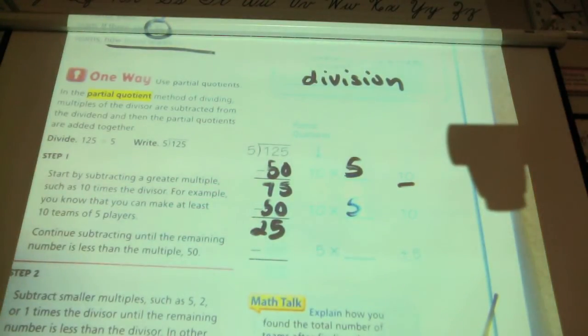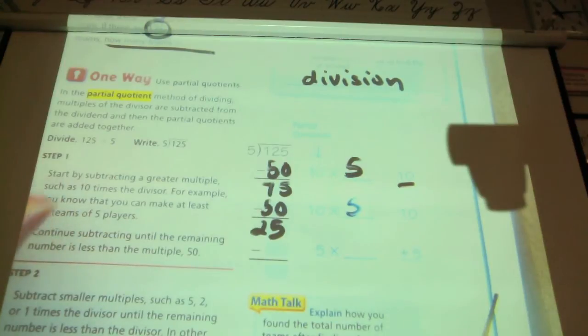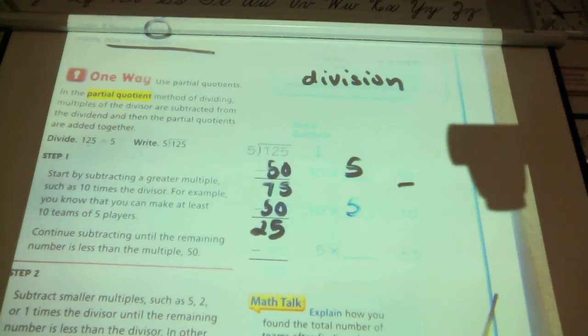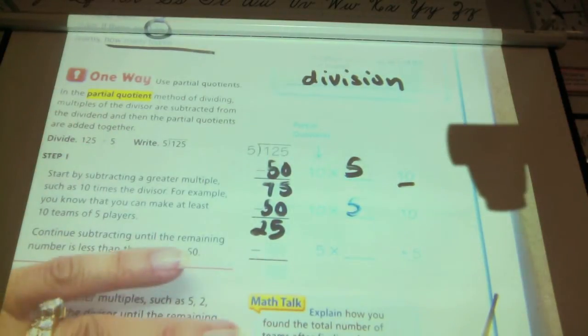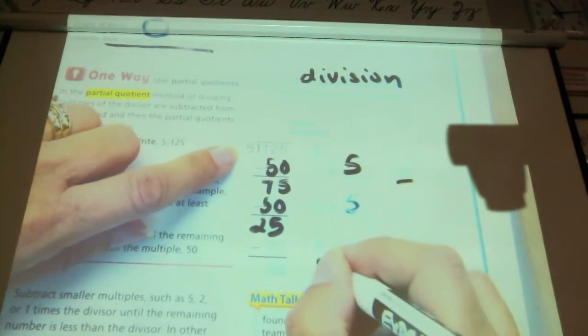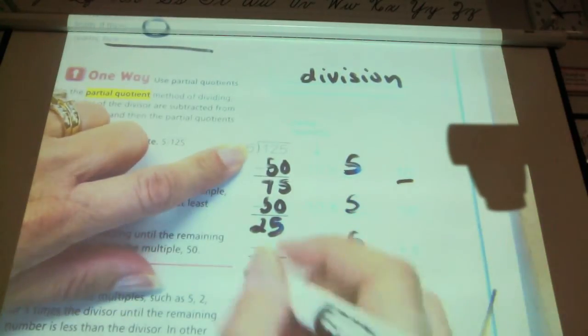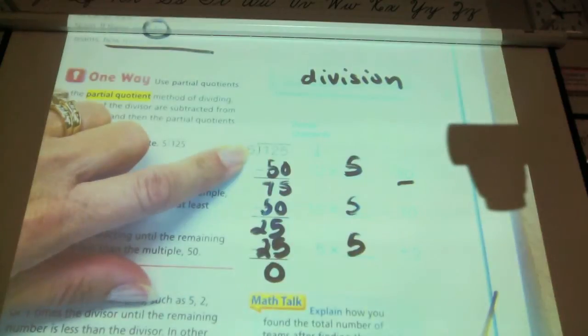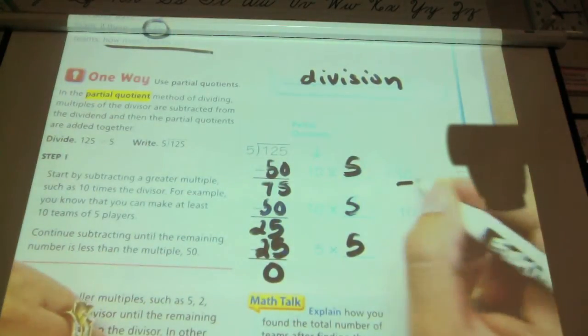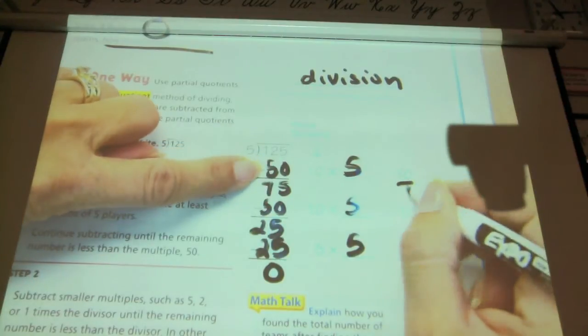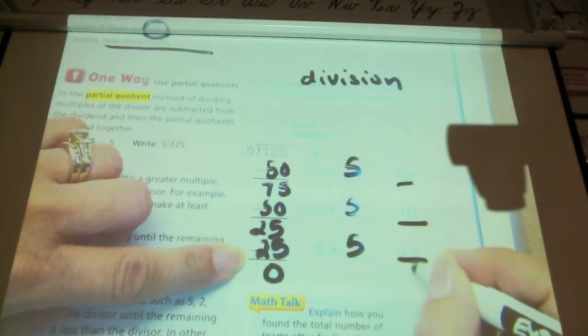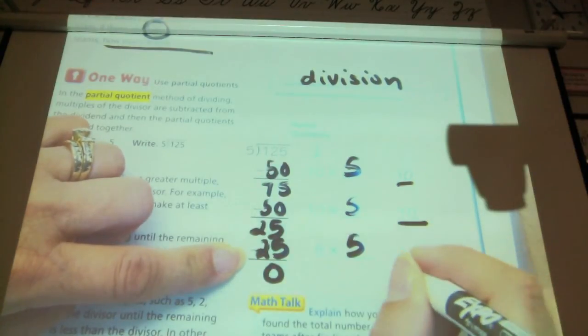Can I do 50 again? No, I can't. But what can I multiply? 5 times what number would equal 25 or close to 25? 5. 5 times 5 would equal 25. Do I have any remainder? No. Now what I need to do is I did 10 here, I did 10 here, and I did 5 more here. So I have 10, 10, and 5. How much does that equal? 25.